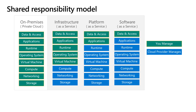This slide shows the shared responsibility model for leveraging private and public clouds. In a private cloud or on-premises deployment, you as the organization are responsible for managing all aspects of the data center — from storage, networking, compute, virtual machines, operating systems, application runtimes, applications, and data and access. When you utilize a public cloud using an infrastructure as a service model, the cloud service provider manages the storage, networking, and compute, and you're left to manage everything else. When using platform as a service, the cloud service provider manages even more, while you're left to only manage the application's data and access. Finally, when using software as a service, the cloud service provider manages everything but data and access, which is left to you.